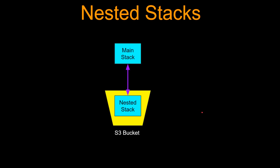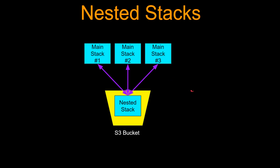Just talking a little bit about the flow — how it works is you put the common template, we call it a nested stack, in an S3 bucket, and then you get a URL for this nested stack. And then from the other stack — let's call it the main stack — you can call the nested stack using the S3 URL. When you have a common nested stack, you can call it from multiple stacks.